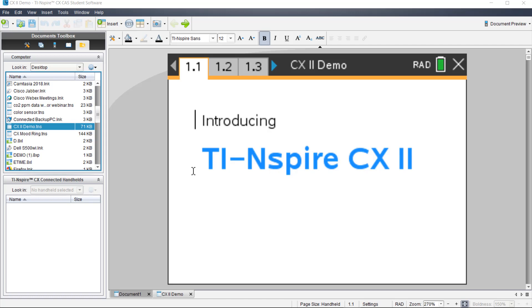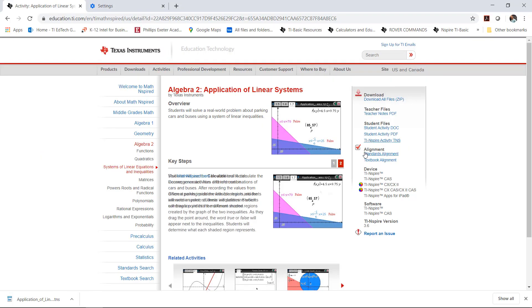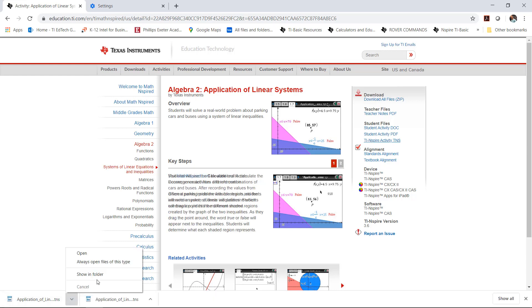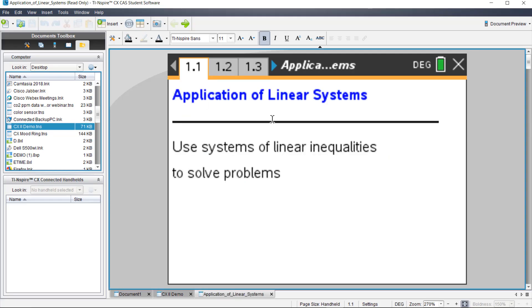Also, you can download a file from online, say our Math Nspired section of our website, or maybe a Google Drive file that your teacher has sent you. If you go to your web browser and you go to Math Nspired, you can click on an activity file, download it here, and say show in folder. Then you can open the file from there.